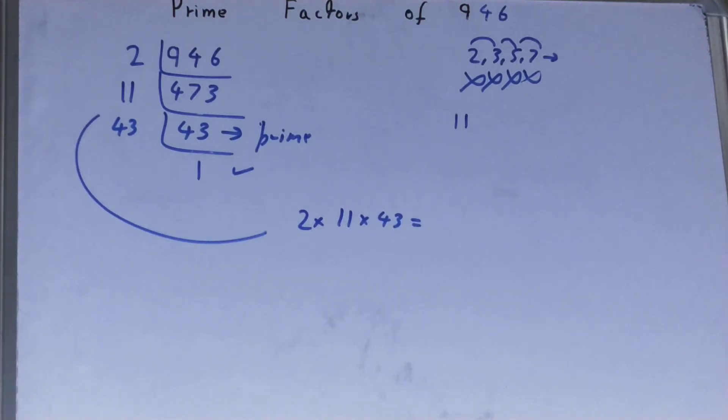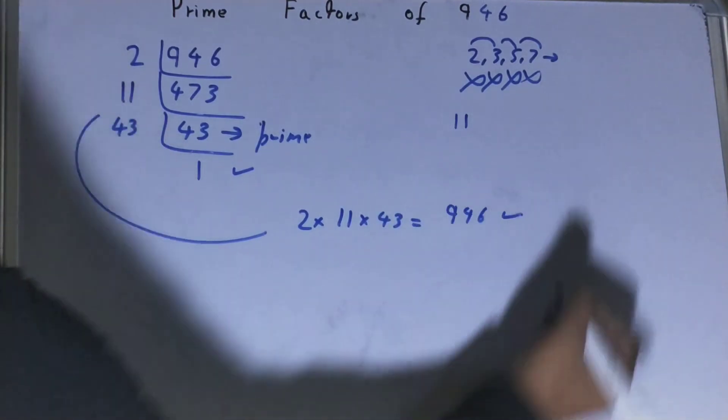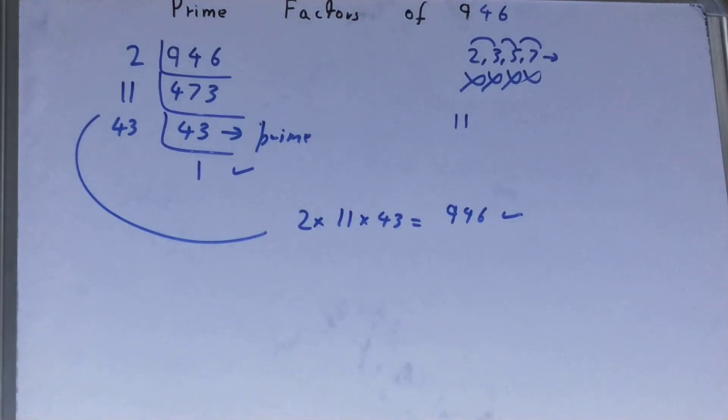Now if you want to check whether it is right or not, you can multiply it, and if on multiplying you get the number back again, that means your calculation is correct. If not, you need to recheck.